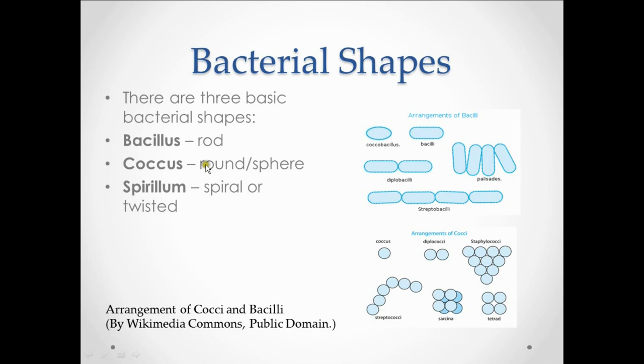The cocci, or the coccus, which is the round one, will have a large number of arrangements. It too can be either single, it can have a double, referred to as the diplococci. It can even be in a cluster, referred to as staphylococcus, or as a chain in streptococcus. Sometimes it will be found in a cube, sarcinae, or even just as four as a tetrad.